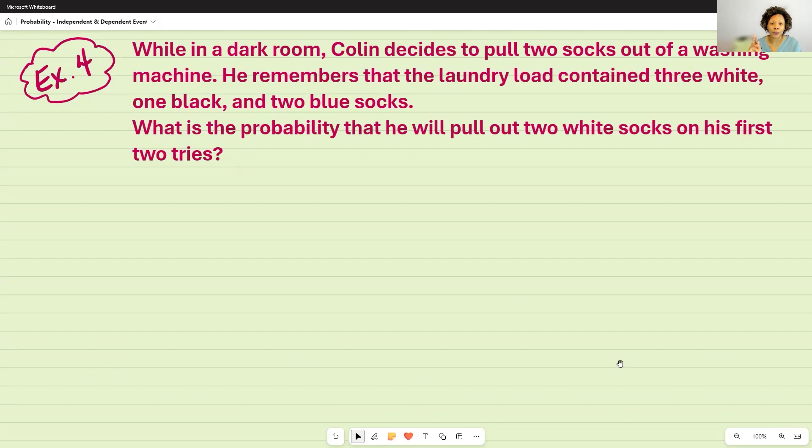So I see that I'm trying to do two things. So the first time I am trying to see out of the entire amount of socks that I have in the laundry load, what are my chances of pulling out a white sock? So let's count them. We have three whites, one black, and two blue. And that is a total of six.